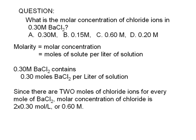Since there are two moles of chloride ions for every mole of barium chloride, we expect the molar concentration of chloride ions to be 2 times 0.30 moles per liter. The correct answer is choice C.